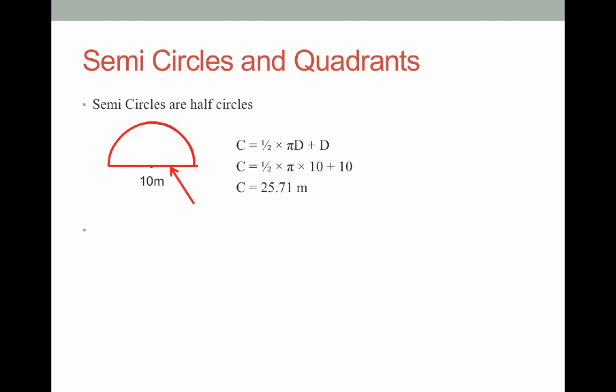That's semicircles. Remember that when you're finding the circumference, if you halve the formula, you'll only get half the curve. You've still got this straight line to add on. Alright, let's go on to quadrants.